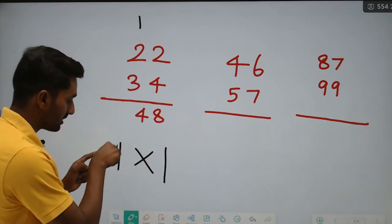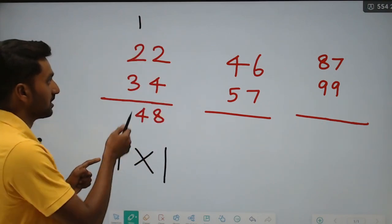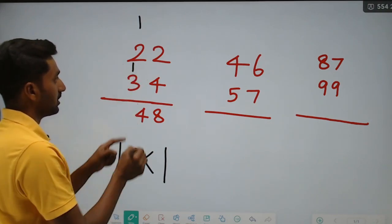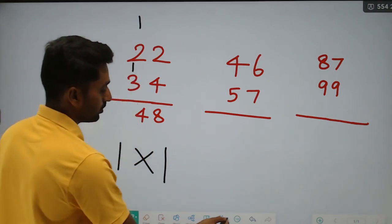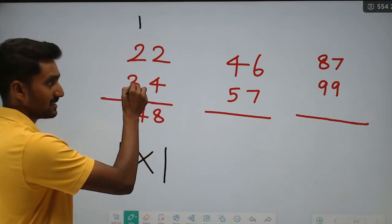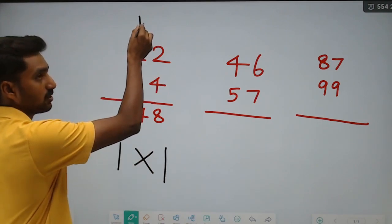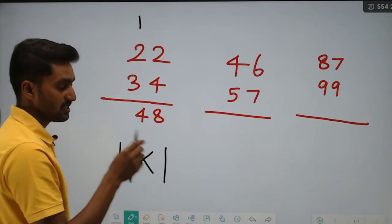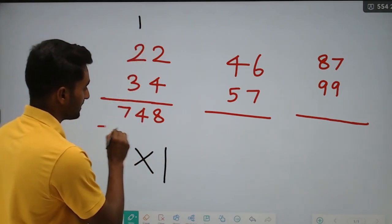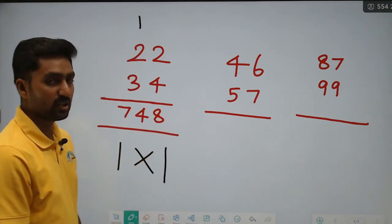Cross, okay. Next, again straight: 3 into 2 multiply is 6. Already carry: 6 plus 1 is 7. So the result part is 748.